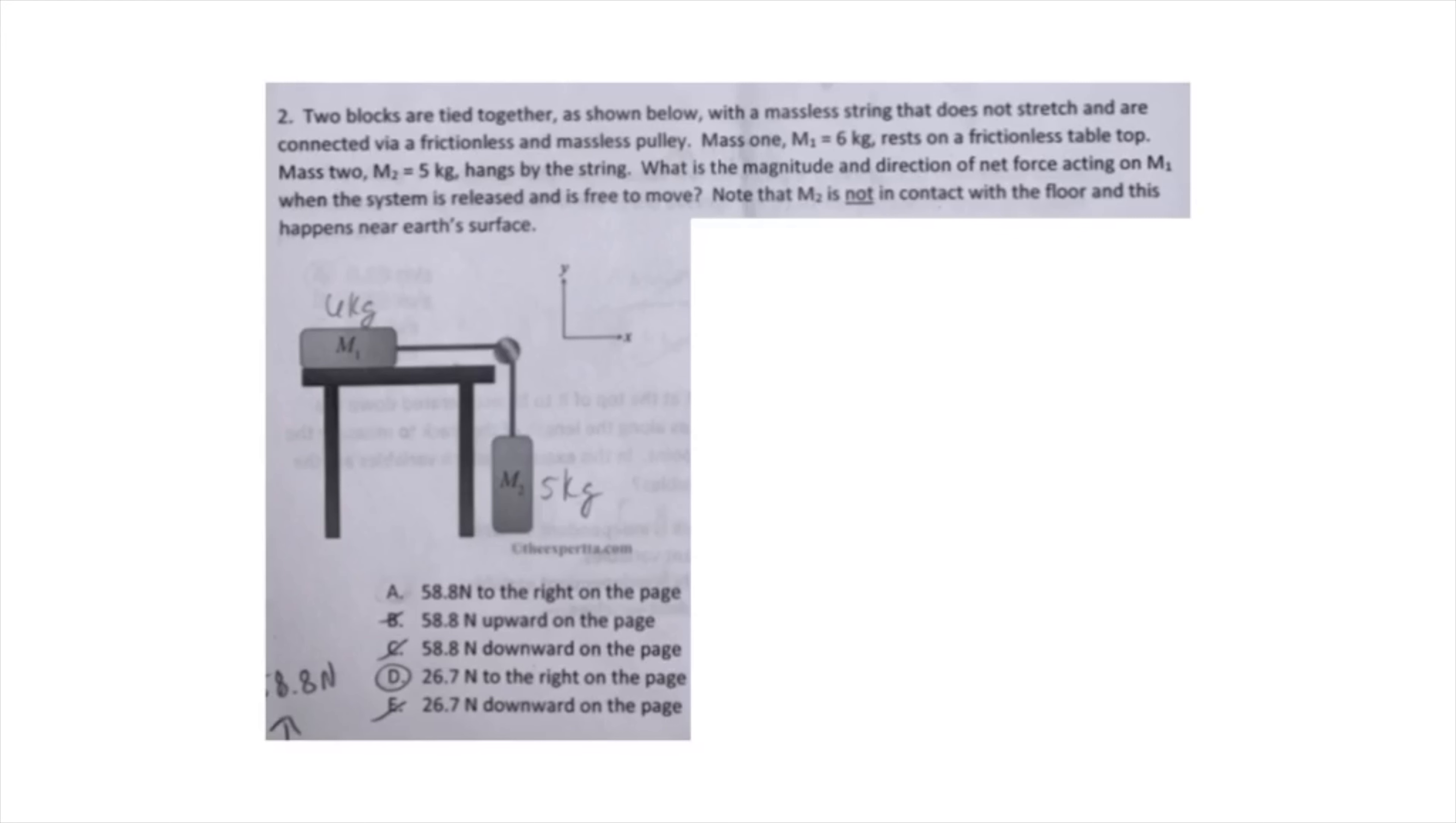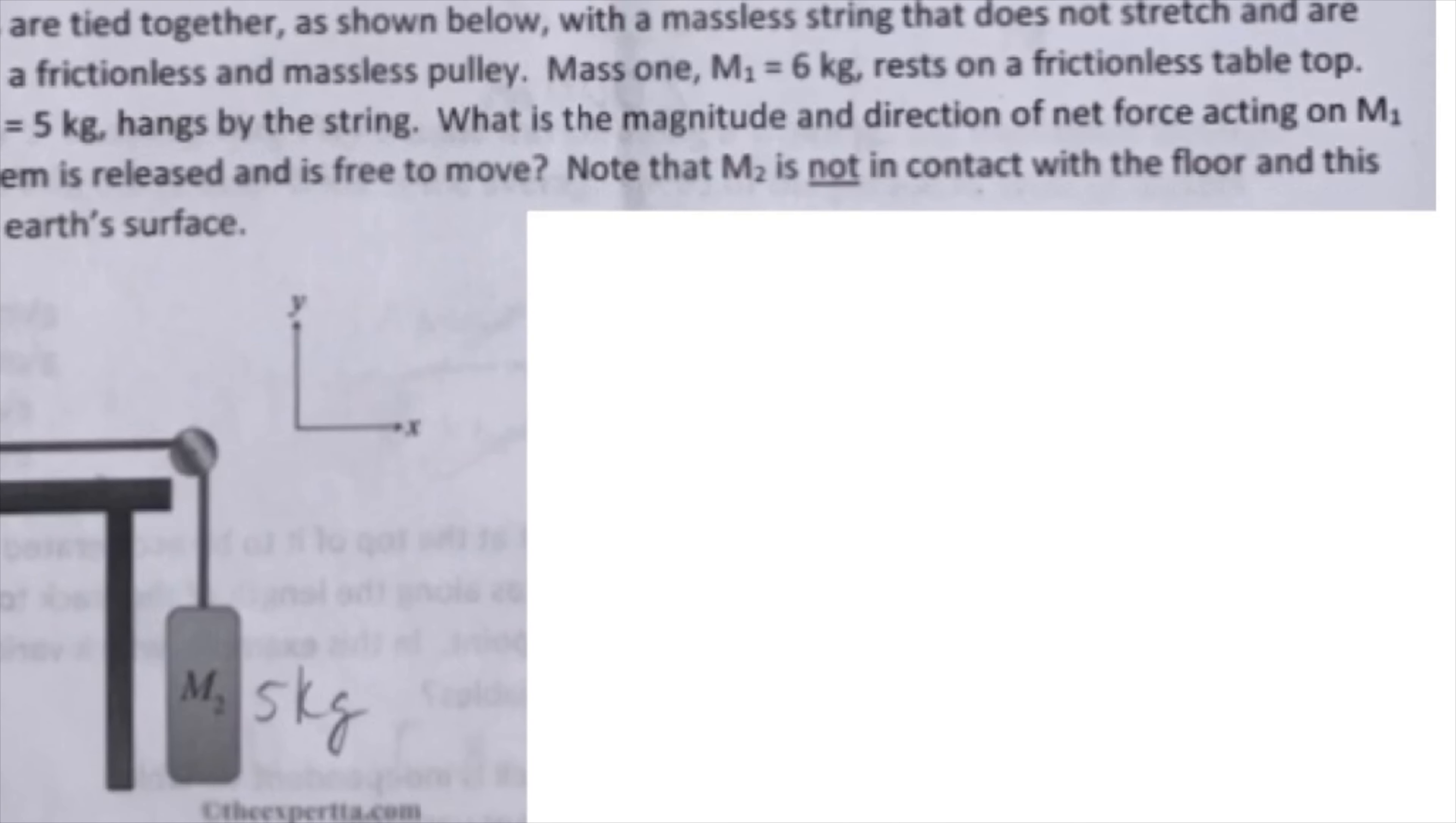Take a moment to read question number two. For each of these boxes, you're going to want to calculate the force acting on M1 and M2. So the force one is equal to six kilograms times 9.8, which is the gravitational force on Earth. And that gives you a net force of 58.8 Newtons.